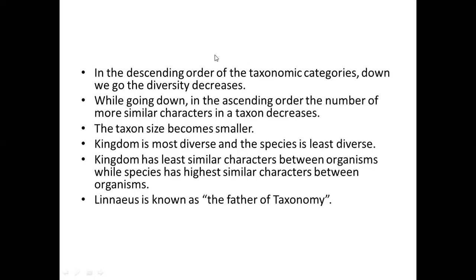Taxonomic hierarchy is arranging the taxonomic categories into ascending and descending orders, either in ascending order or in descending order. We have to mention which order we are writing. In descending order, we have written: kingdom, phylum, class, order, family, genus, and species. These are written in descending order according to this hierarchy.